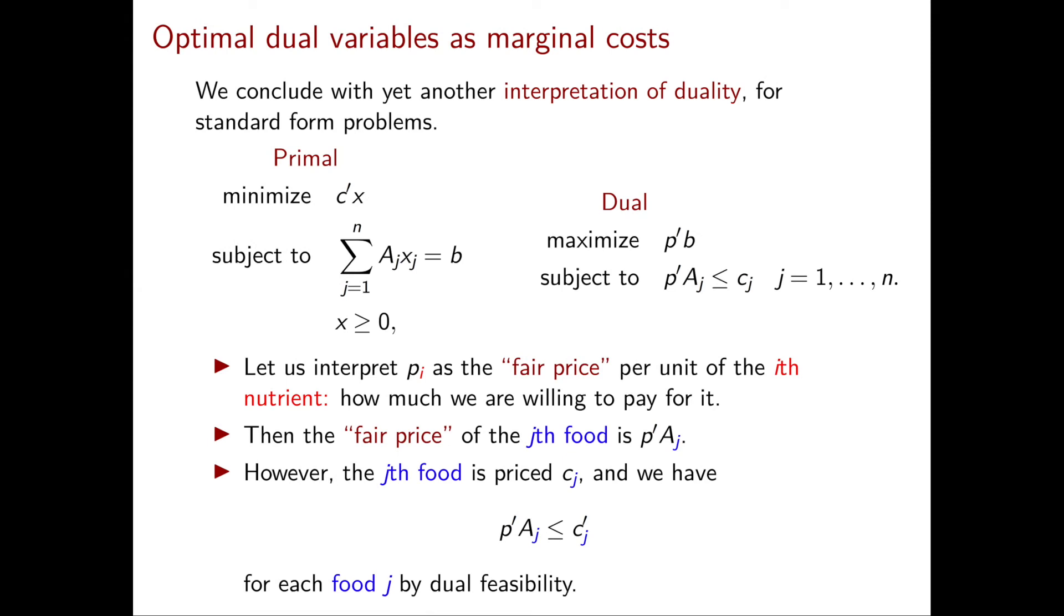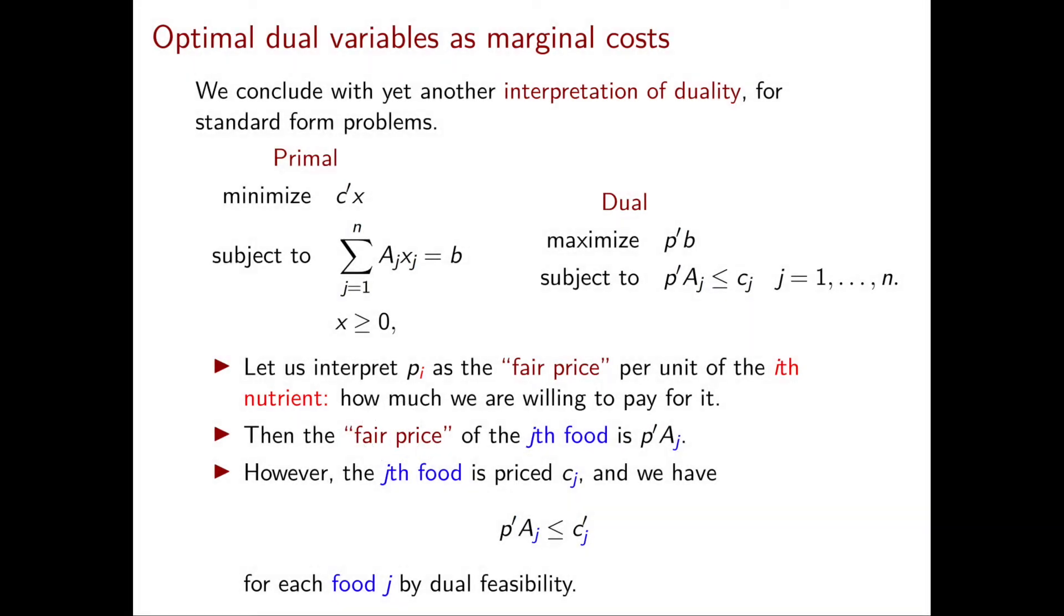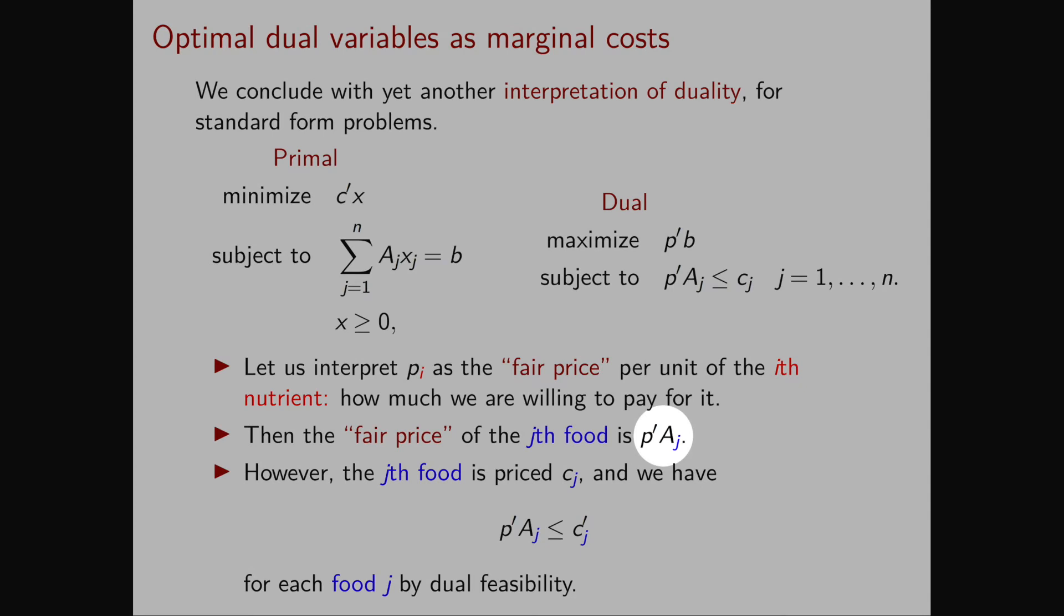So let's assume that the Pi's can be interpreted in this way. Then we can also understand what is the fair price of the J-th food. Everything we need to do is to sum the fair price of the nutrients that it contains. So the fair price of the J-th food is P transpose Aj.